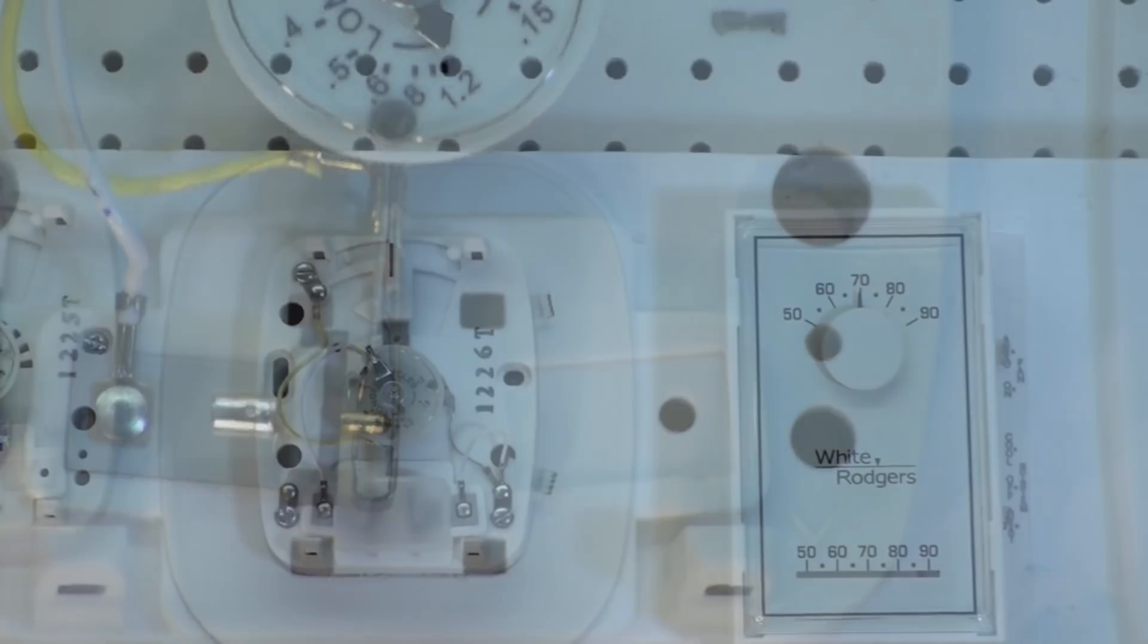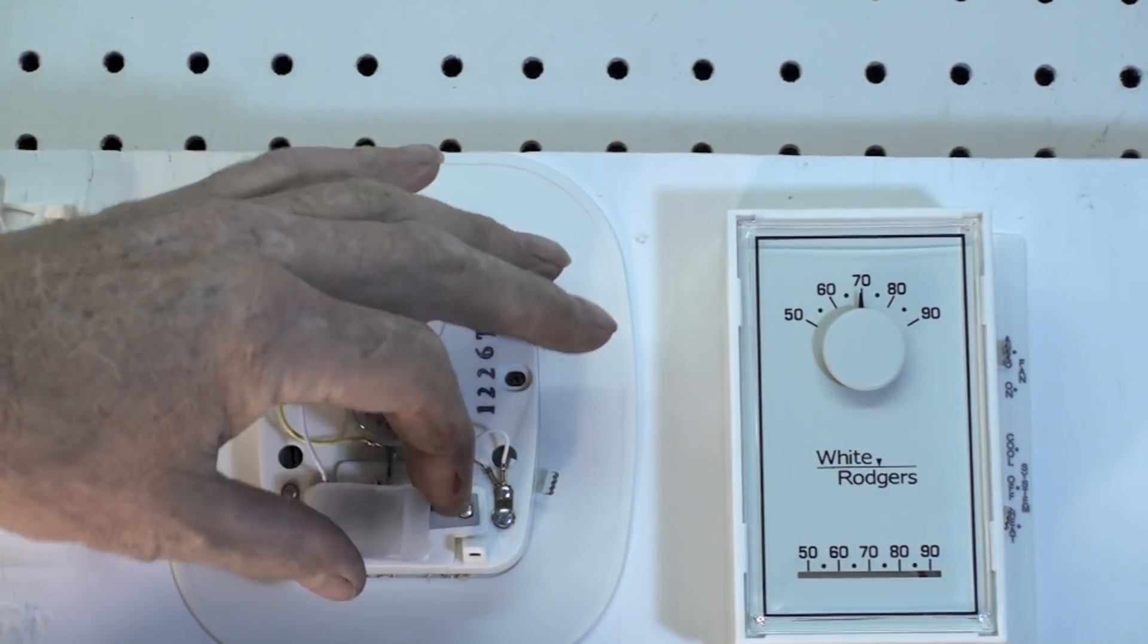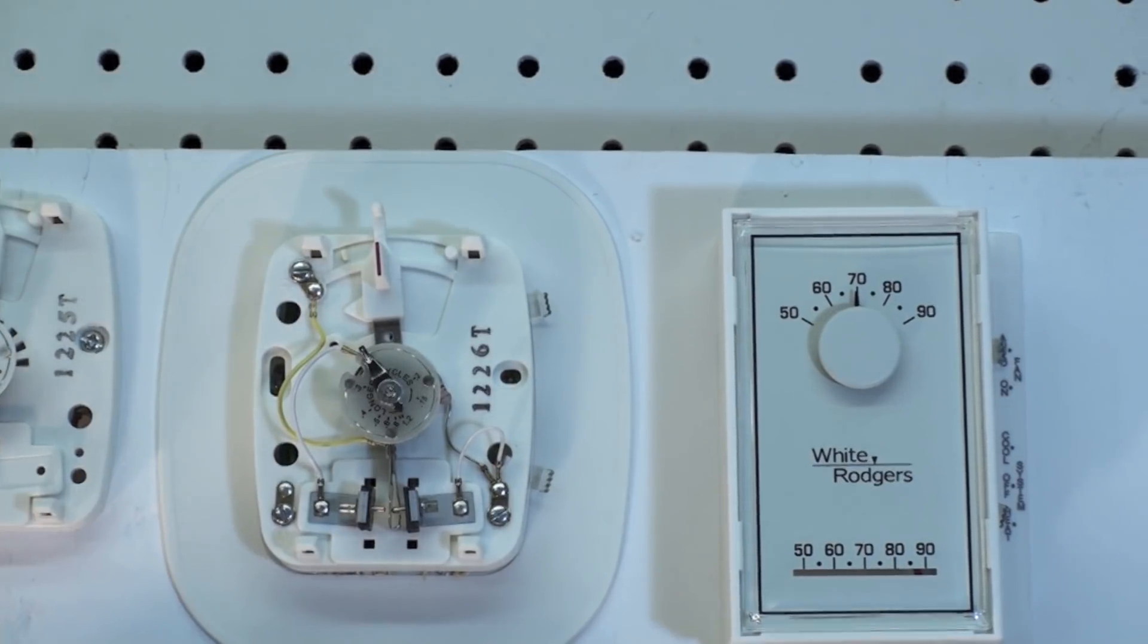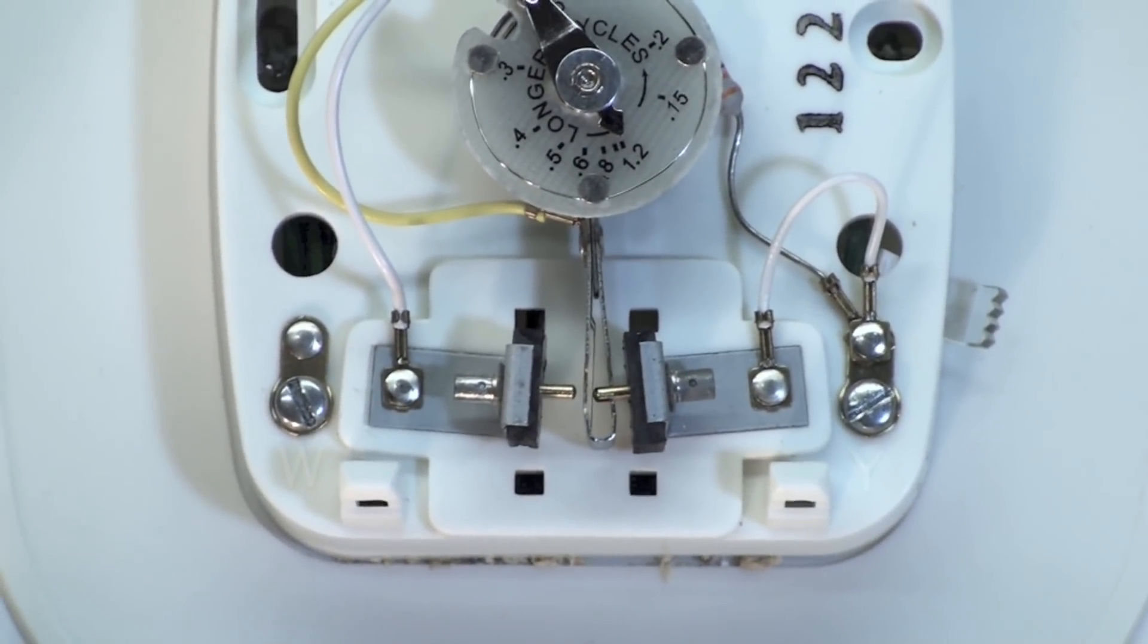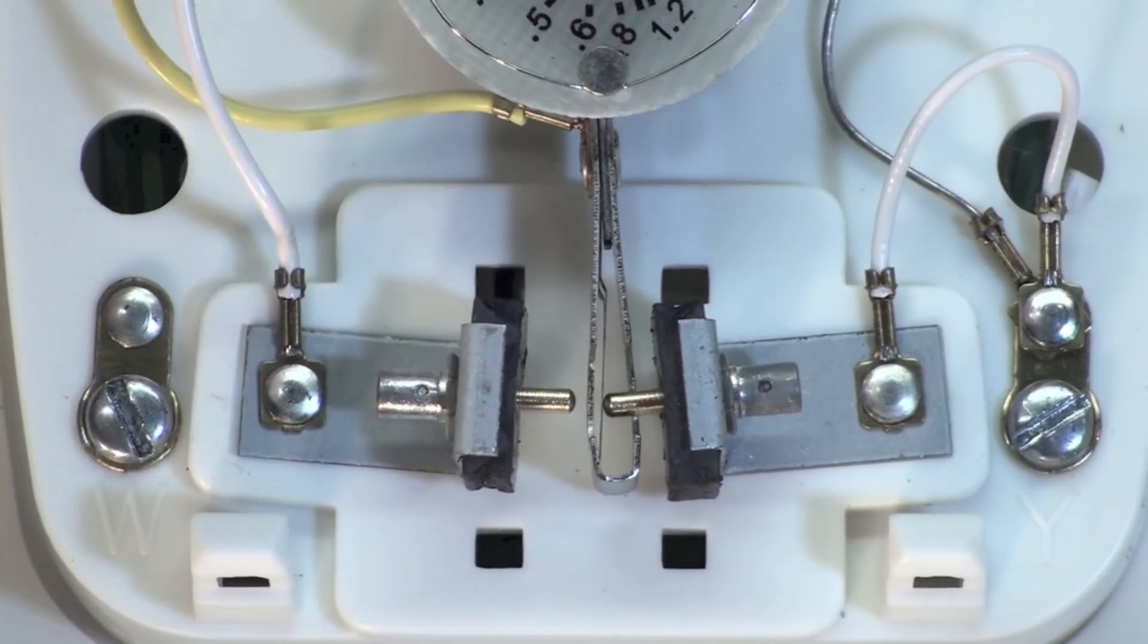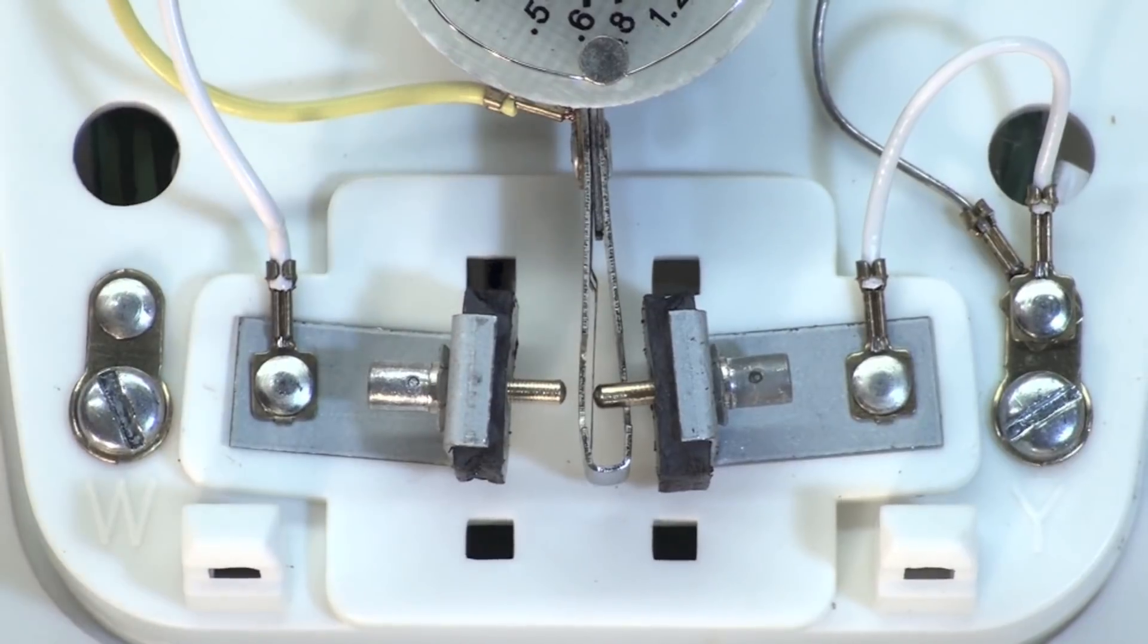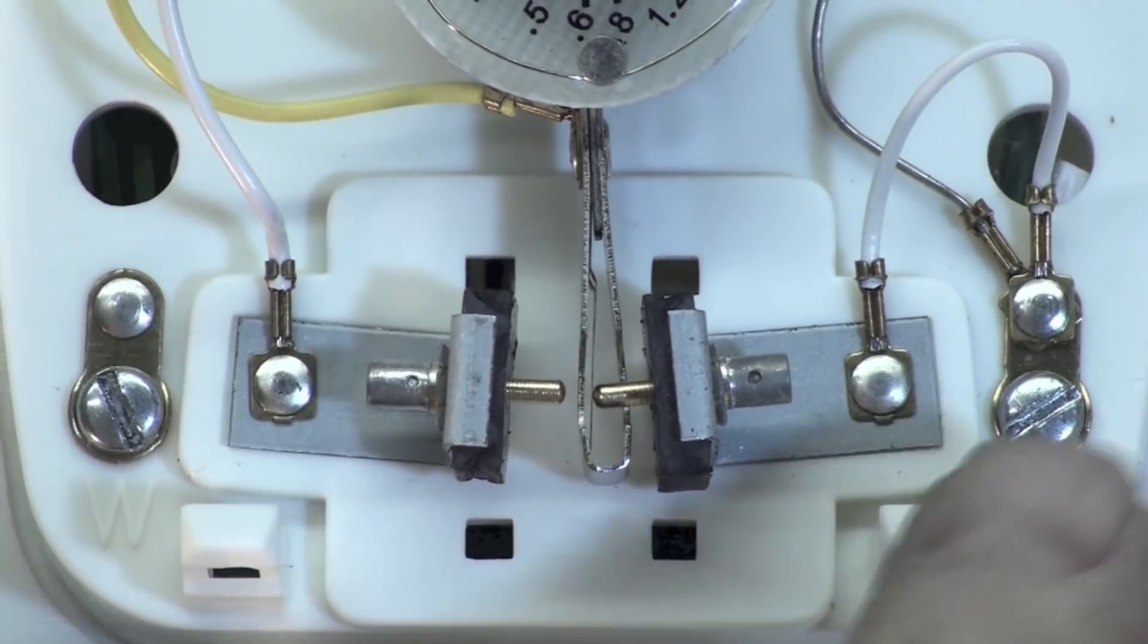This heating and cooling stat, the only difference between the first one I showed you and this one - by the way these things all have covers on them, don't lose the covers - this one's got two sets of contacts. You can see that better. As the lever moves back and forth it makes both, clicks over here, clicks over there. The other one only had one set of contacts but this has got a set of contacts here and a set of contacts there, so it could make for heating or cooling.